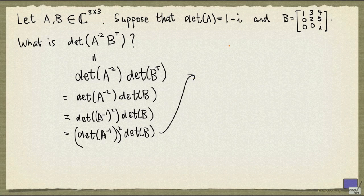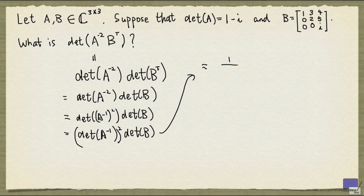Now, what is the determinant of A inverse? Well, we are given the determinant of A. The determinant of A inverse is 1 over the determinant of A, as long as A is non-singular. But 1 minus i is not 0, so A is non-singular. So this is precisely 1 over (1 minus i), squared.